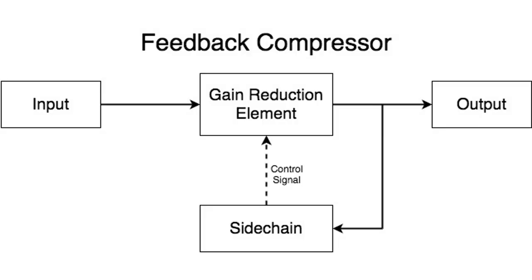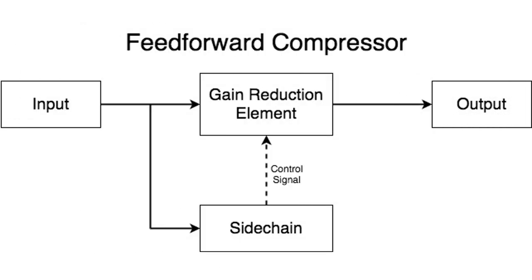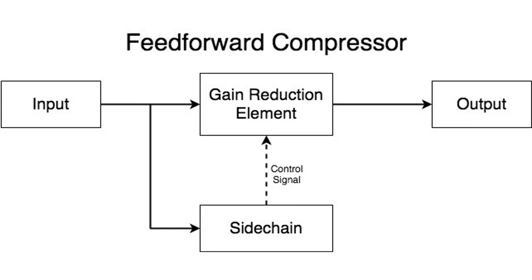A visual reference will help you understand. This is the block diagram of a feedback compressor. Feedback compression feeds the audio signal into the side chain just after the gain reduction element — this compressor type reacts to the signal amplitude without anticipating.